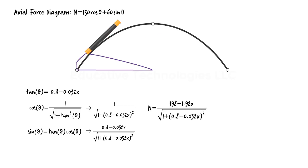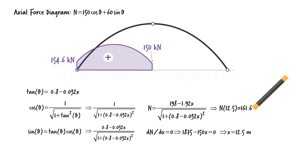The graph of this equation looks like this. The equation gives us 154.6 when x is 0 and 150 when x is 25. To determine the maximum value for axial force in this segment, we set dn/dx to 0. That leads to this equation, which gives us x equals 12.5. Maximum axial force in the arch develops 12.5 meters from the left support. The magnitude of the force is 161.6 kN.